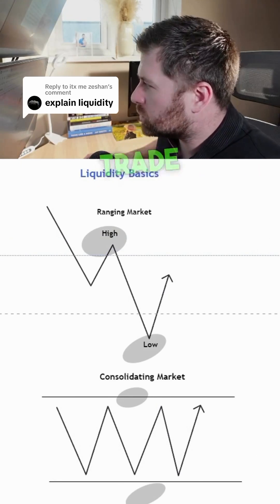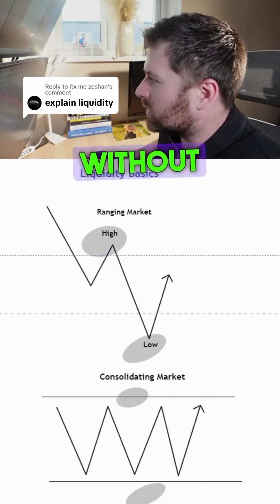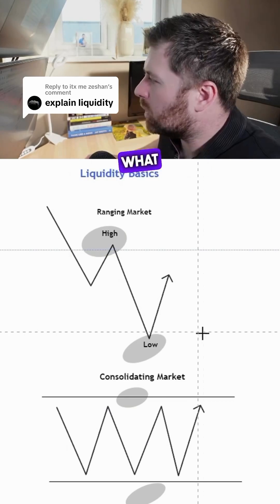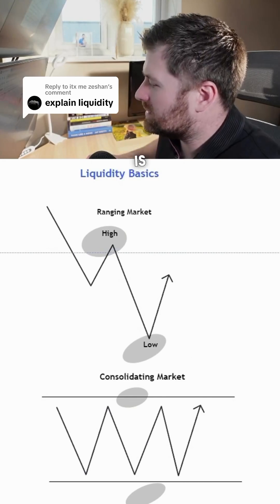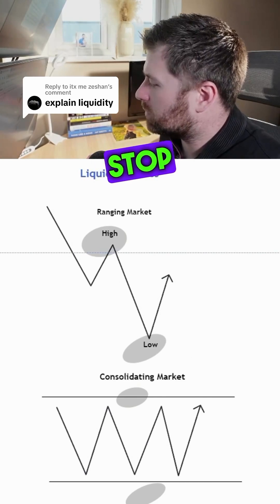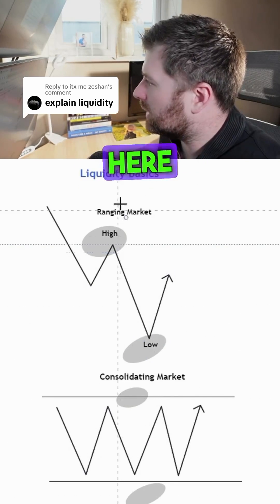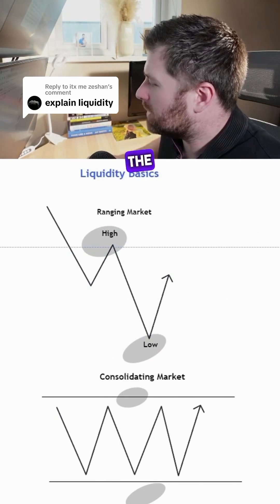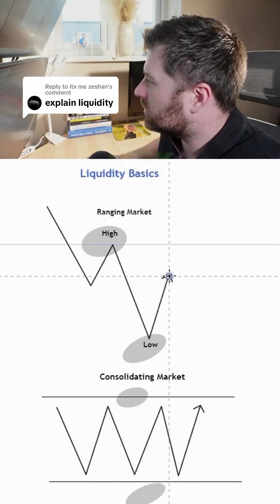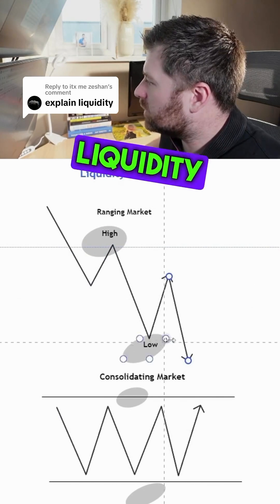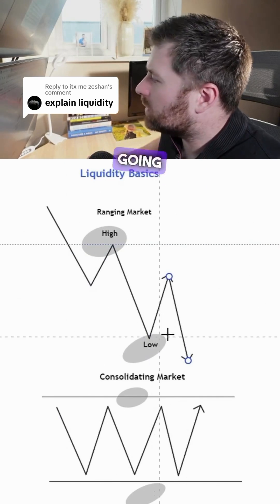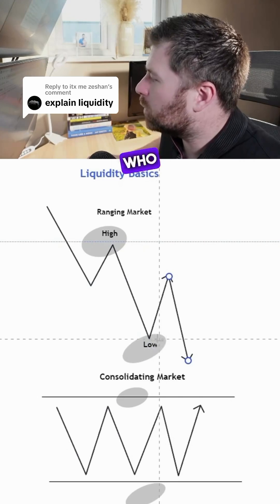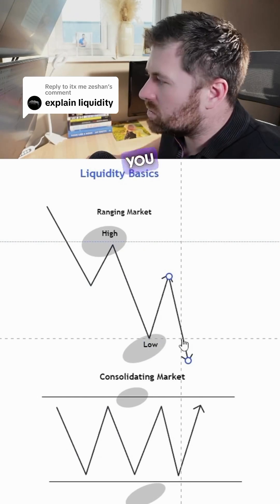We have to try and trade the markets without becoming liquidity. What I mean by that is there are stop losses all around this low here and all around this high here. If the market wants to seek this liquidity here, it is going to take out a lot of people who have got stop losses in there.